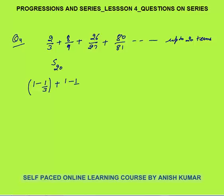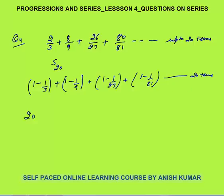So 8/9 is 1 minus 1/9, 26/27 is 1 minus 1/27, and 80/81 is 1 minus 1/81, continuing up to 20 terms. The 1 appears 20 times, giving 20. Taking minus as common, we subtract the GP: 1/3 plus 1/9 plus 1/27 plus 1/81 up to 20 terms.